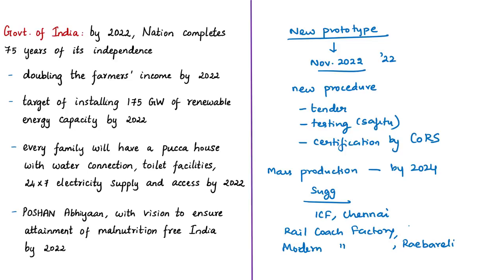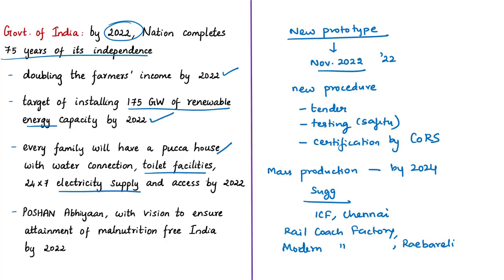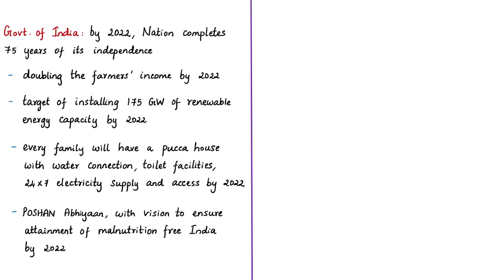The year 2022 is significant as it marks the 75th year of Indian independence, by which time several national targets are to be achieved: doubling farmers' income by 2022; installing 175 gigawatt of renewable energy capacity by 2022; ensuring every family has a pucca house with water connection, toilet facilities, and all-time electricity supply by 2022; and attaining a malnutrition-free India under Poshan Abhiyan by 2022. In this context, the target of developing 45 Vande Bharat trains or rakes by 2022 is a crucial target for the Ministry of Railways.